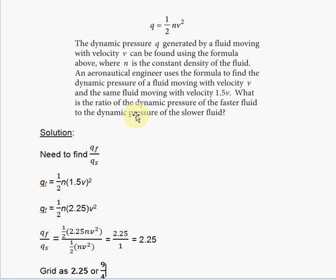The first thing you should know is that 1.5V, since this coefficient 1.5 is greater than 1, this velocity 1.5V is greater than velocity V. That means the fluid moving with 1.5V has a greater velocity than the fluid moving with velocity V.